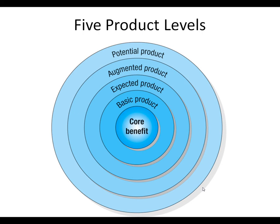The basic product is quite simply what it does. The expected product is what you hope it does. The augmented product covers features above and beyond what it normally does, like Bluetooth, four-wheel drive, and automatic door openers. The potential product is what the product could be down the road. Read the book carefully about these because there are subtle differences, and the book does a good job of explaining them.